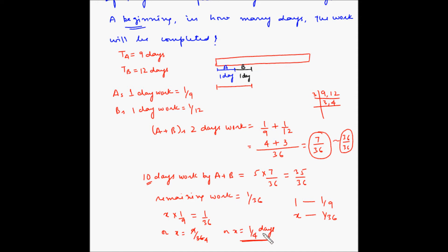So in a quarter of a day, A will be able to complete the remaining 1/36 of the work. The total time taken is 10 days plus 1/4 of a day. So 10 plus 1/4, which can also be written as 10 and 1/4 days.